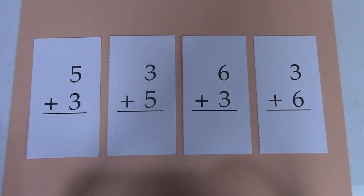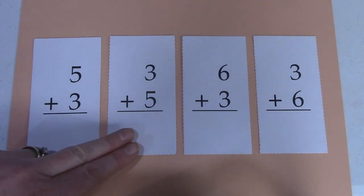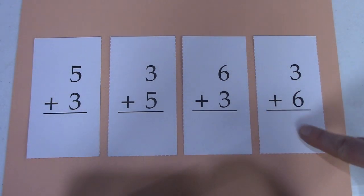Let's take a look at these ones. I have 5 plus 3, 3 plus 5, 6 plus 3, and 3 plus 6. Do you notice something? What do you notice about these two facts? And do you notice something about these two facts as well? They're switcheroo facts.